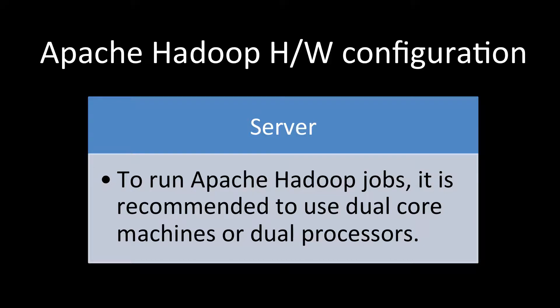To run Apache Hadoop jobs, it is recommended to use dual-core or multi-core machines with dual processors. This enables good parallel processing and very high-speed computing. You don't need very high-end machines — even lower-end dual-core machines are much better than single-core options.